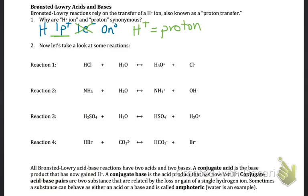The double-headed arrow means the reaction is reversible. Reading left to right: HCl on the reactant side becomes Cl⁻ on the product side, so HCl donated a hydrogen ion. I draw an arrow from HCl to H₂O to show the hydrogen moving. The substance that donates the hydrogen ion is the acid, and the substance that accepts it is the base.